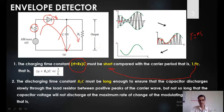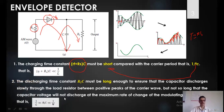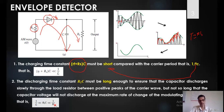When it charges fast and discharges slowly, it holds the charge and when it gets the peak of the next cycle, it charges again quickly and holds the charge for a long time, tracing the envelope. So the condition we need to satisfy is that RL·C, the discharging time, should be very much greater than 1/FC, but it should be less than 1/W, where W is the frequency of the message signal or the message bandwidth.